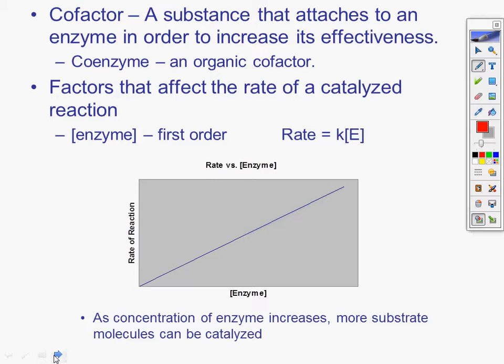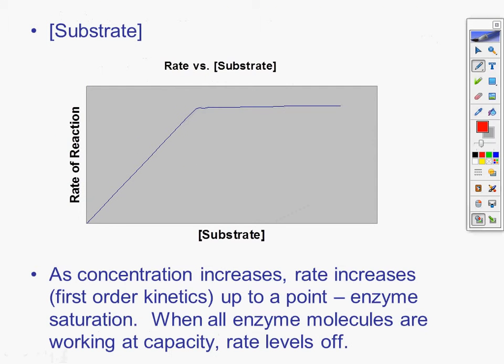Factors that affect the rate of a catalyzed reaction. Enzyme. This, as you can see, is first order. Straight line. And the rate is directly proportional to the concentration of the enzyme. K is the rate constant, concentration of E. As concentration of enzyme increases, more substrate molecules can be catalyzed.